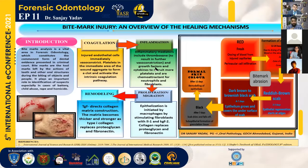After that, remodeling starts. Tissue growth factor directs collagen matrix construction. The matrix becomes thicker and stronger as type 1 collagen replaces proteoglycan and fibronectin. During this healing mechanism, color changes of the tissue occur.